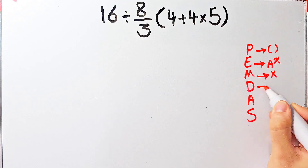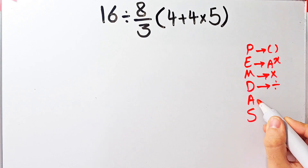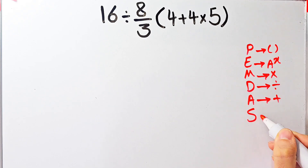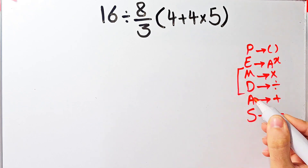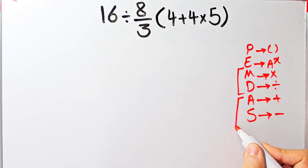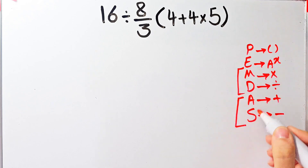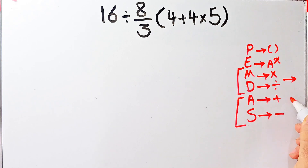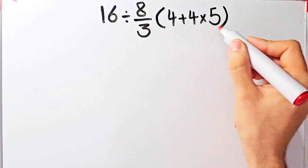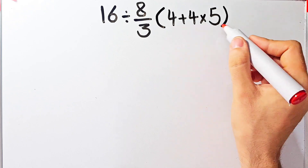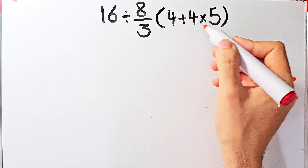D stands for division, A stands for addition, and S stands for subtraction. Multiplication and division have the same level of priority, and when we have both in an expression we start from the left and simplify. According to the PEMDAS rule, first we simplify the parentheses.